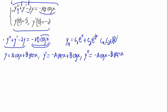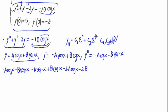Substituting into the differential equation, we have: (-a·cos(x) - b·sin(x)) + (-a·sin(x) + b·cos(x)) + (-2)(a·cos(x) + b·sin(x)), which simplifies. Grouping terms: (-2a·cos(x) - 2b·sin(x)), and the whole expression equals -10·cos(x).